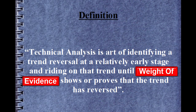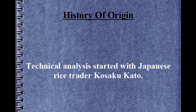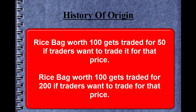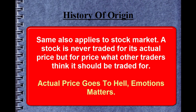Technical analysis started with Japanese rice trader Kosaku Kato, born in the year 1716. He was forced to realize that the price for which rice is traded is not what it should be, but what traders think it should be. For example, a rice bag which should trade for 100 might get traded for 50 or 200 because traders want to trade at that price. He found patterns in candlesticks which he used as emotional indicators of other rice traders to buy and sell rice at the most profitable times, making him the most successful and feared rice trader of his time.